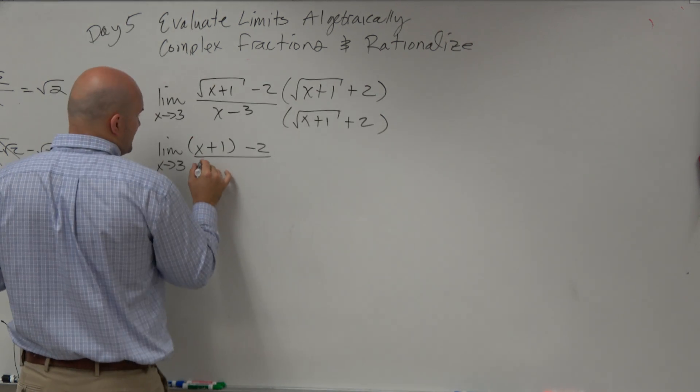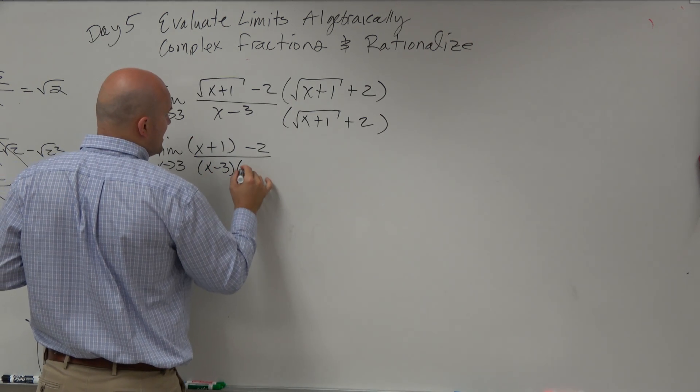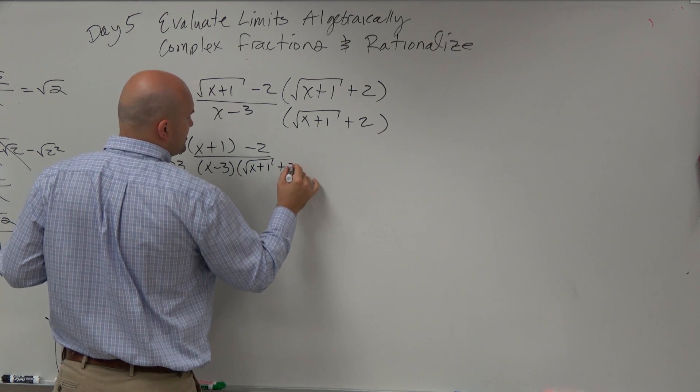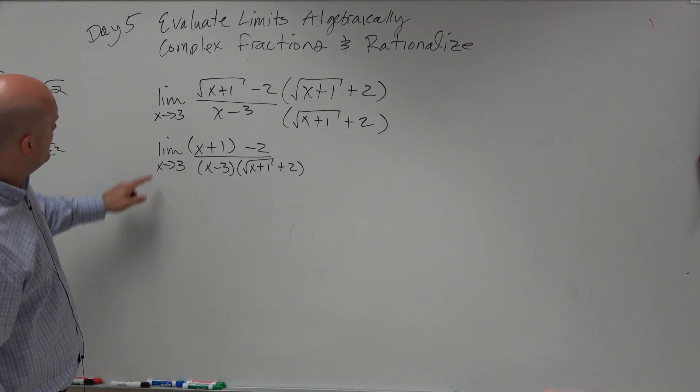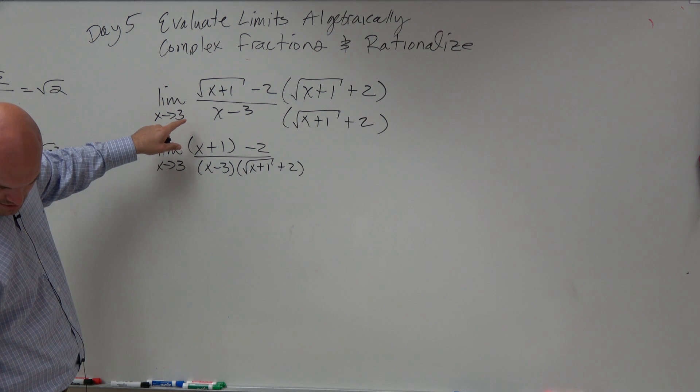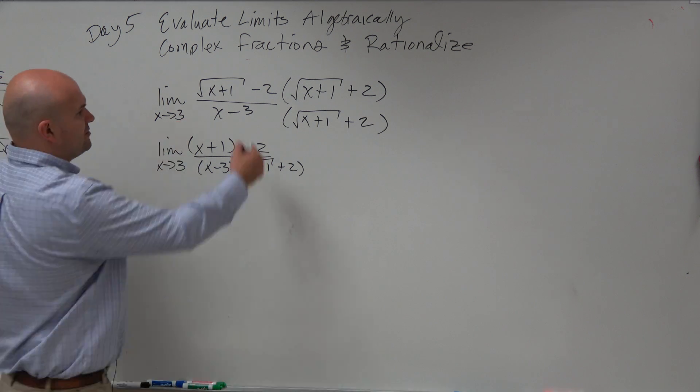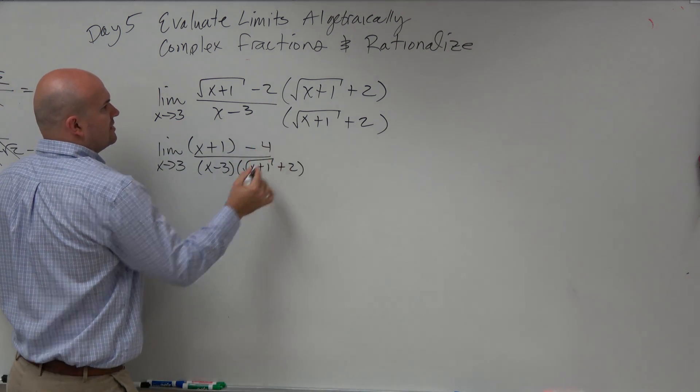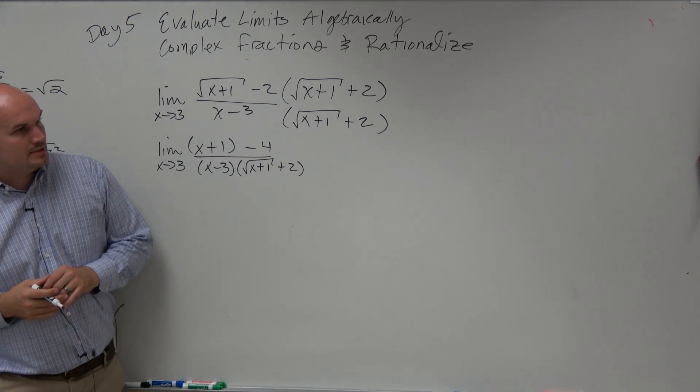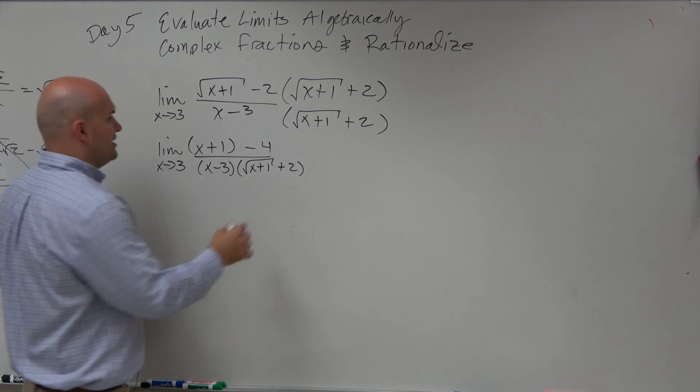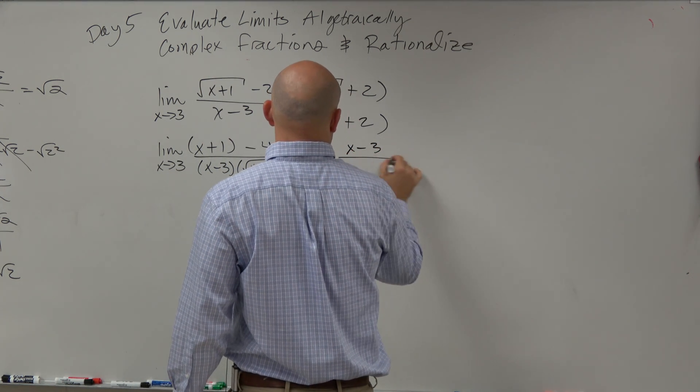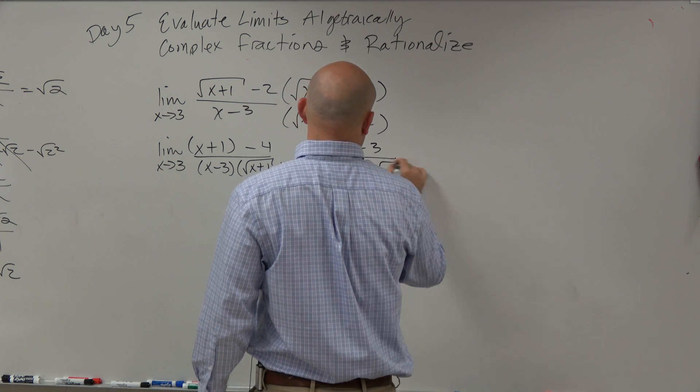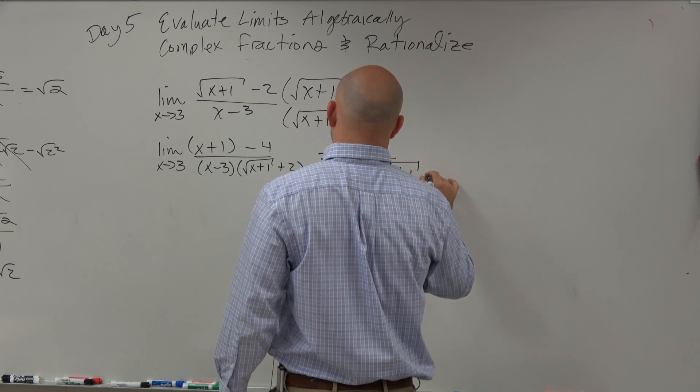And then in the denominator, we're just going to leave this as x minus 3 times the square root of x plus 1 plus 2. x plus 1, oh I'm sorry, I multiplied that wrong. That's 4. Negative 2 times 2 is negative 4. Now when we go ahead and simplify this, this becomes x minus 3, all over x minus 3 times the square root of x plus 1 plus 2.